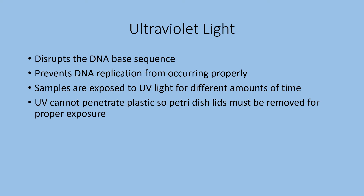Another example is ultraviolet light or UV light. It does disrupt the DNA base sequence and therefore prevents DNA replication from occurring properly, because you've messed up the sequence of the DNA. What we do here is take samples, plate them out on petri dishes, and then expose the plates to UV light for different amounts of time. You'll have a zero time as your control, then vary the amounts of time exposed to UV light, incubate the plates, and see if growth was inhibited or not.